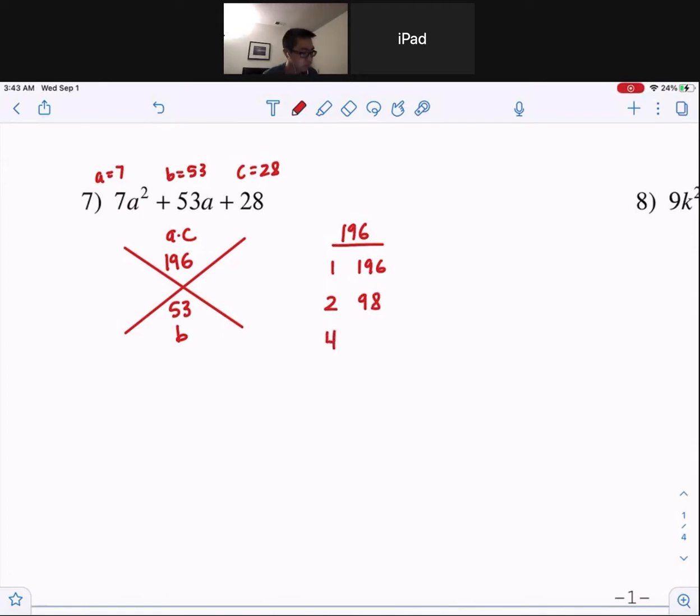Three doesn't go in there, but four goes in there 49 times. And simply by guessing, checking and trying to find factors, you guys, look, four and 49 is a combination. So, 4 and 49. I'll put this over here.